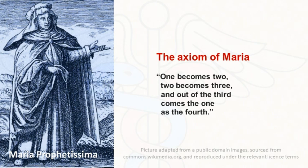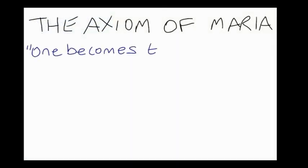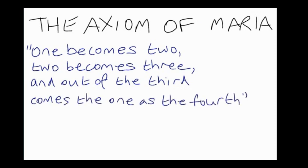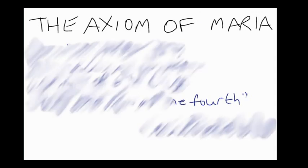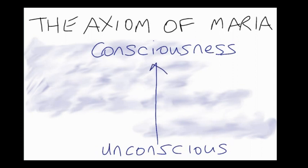Maria Prophetissima was an early alchemist who invented various tools and utensils. Her name survives in the bain-marie, a form of double pot used in cooking. Her axiom was that one becomes two, two becomes three, and out of the third comes the one as the fourth. The axiom therefore has four stages. The first stage of development is unconsciousness — this does not refer to being asleep, but to having no self-awareness and not being able to discriminate between the opposites.